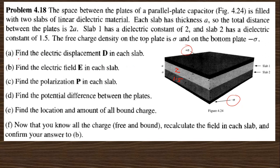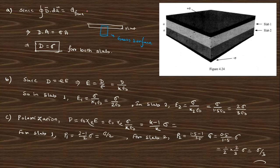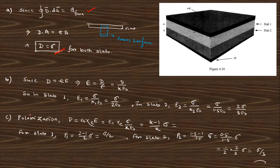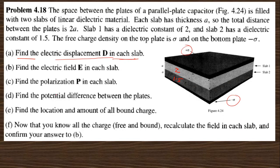The free charge density on the surface is plus sigma and minus sigma. You need to find the electric displacement D in each slab. Using Gauss's theorem you can find the electric displacement D, which equals sigma. This is the same for both slabs.